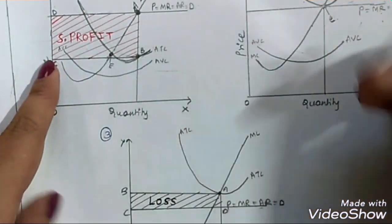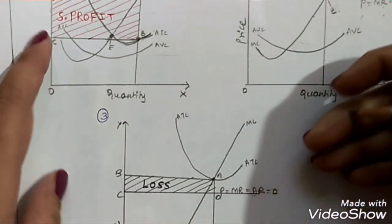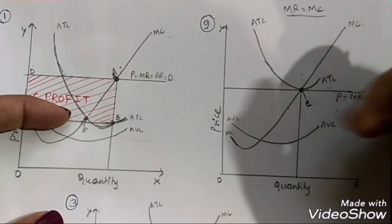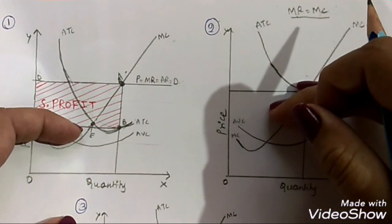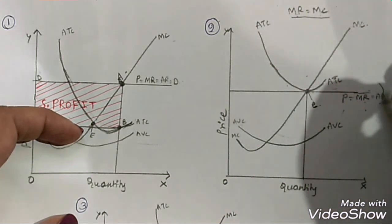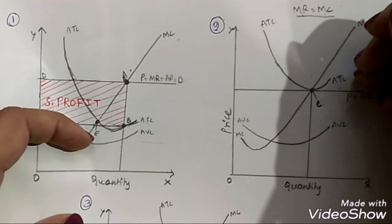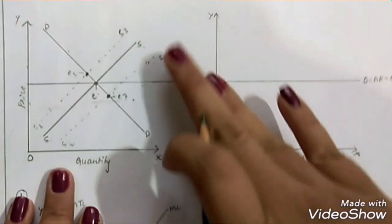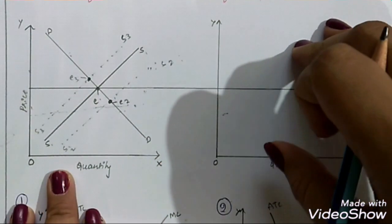In the short run, the perfect competition market may earn super normal profits, normal profits, or losses. But in the long run, this type of market mostly earns normal profits, where the average total cost will be equal to the price line. So that was all about profit maximization in perfect competition. If you found this helpful, please hit the like button. I'll see you in my next video — happy learning!